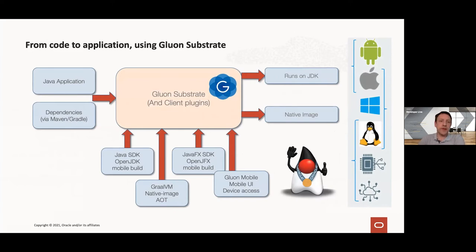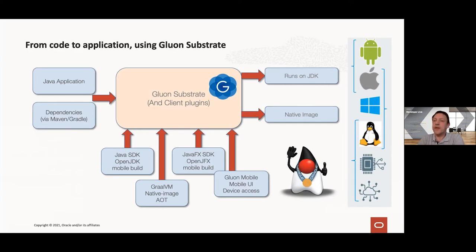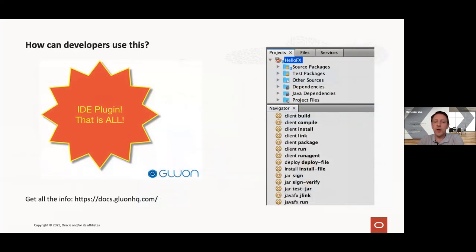This diagram shows the plumbing that happens under the hood. We start from the Java application and its dependencies, and then a plugin called Gluon Substrate — integrated with IDEs — pulls in all dependencies, the Java SDK from OpenJDK Mobile, the JavaFX SDK, and leverages the GraalVM native image AOT compiler. It can also use Gluon Mobile to create polished applications. It then compiles and links everything needed, producing either an output consistent with the JDK or a native binary for different devices. As a developer, all you need is the IDE plugin — everything else is pulled in automatically.